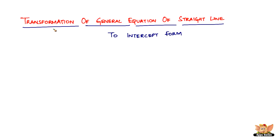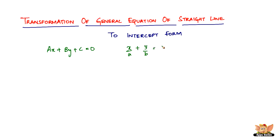In this video, we're going to look into the transformation of the general equation of a straight line to the intercept form. We know that the general equation of a straight line is given by ax plus by plus c equal to 0. We're going to see how to transform this to the intercept form, which is x by a plus y by b equal to 1.